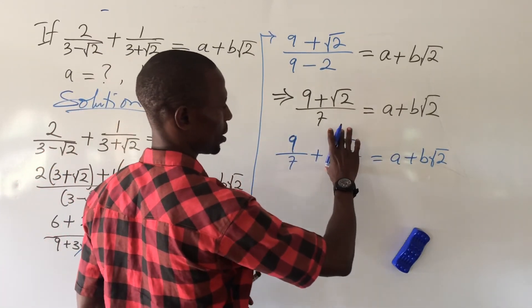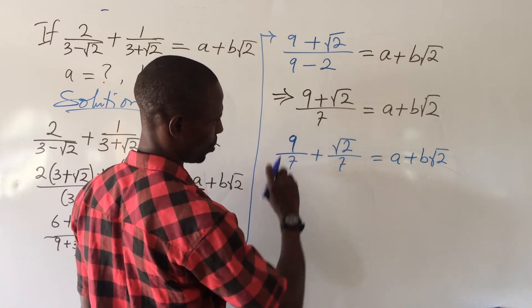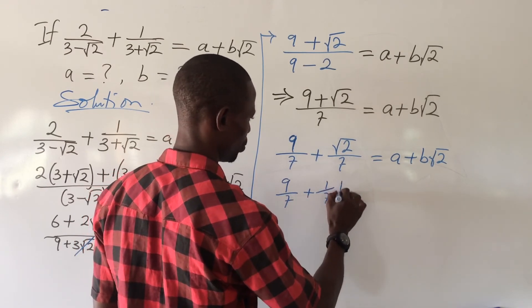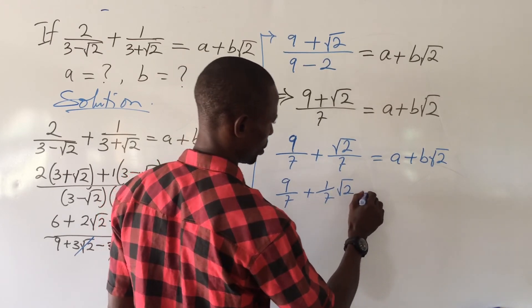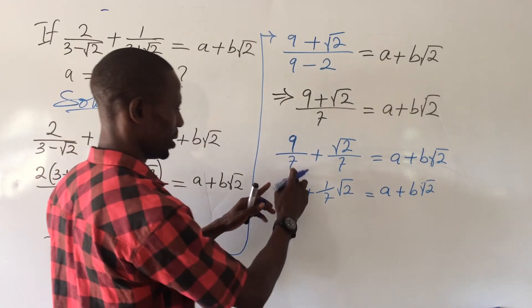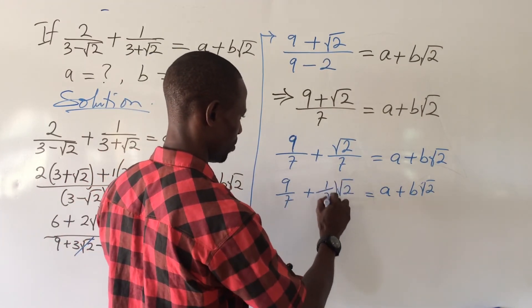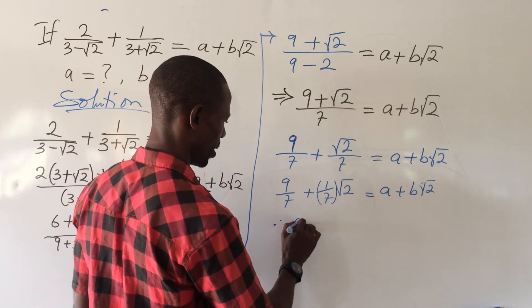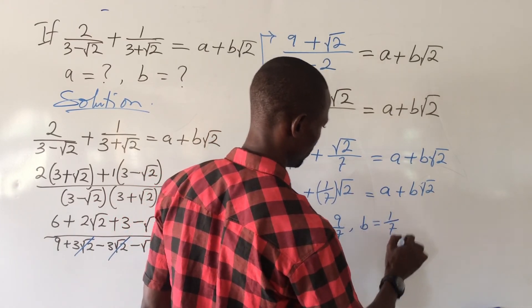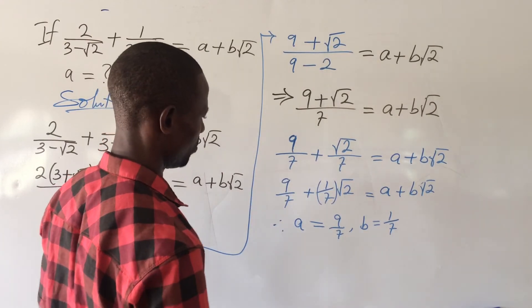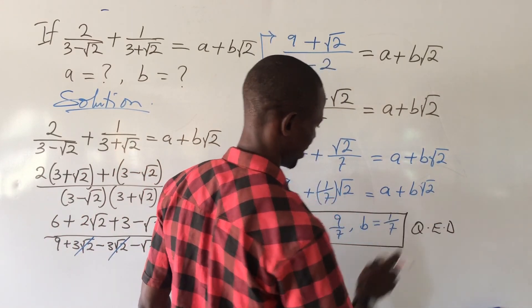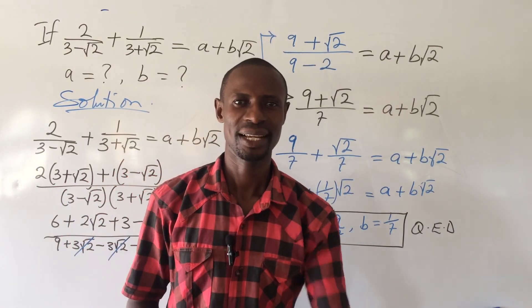Comparing terms, this can be rewritten as 9 over 7 plus (1 over 7) root 2, which equals a plus b root 2. Therefore, a equals 9 over 7 and b equals 1 over 7. QED — simple and straightforward. Thank you for being there, God bless you.